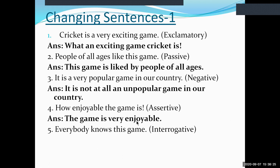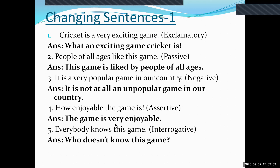Number five: 'Everybody knows this game.' We have to make this sentence interrogative. When 'everybody' is the subject, we make the interrogative by using 'who' and then add a negative since the sentence is affirmative. The interrogative form is: 'Who doesn't know this game?' Make sure you omit the 's' from 'knows,' otherwise your answer will be incorrect.